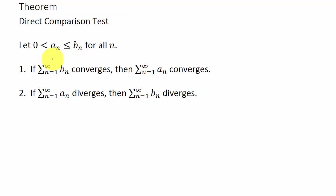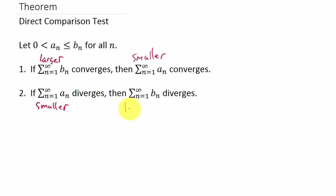What this is saying is: if the larger series converges, then the smaller series converges. And if the smaller series diverges, then the larger series also diverges. That's an easy way to look at it — you compare the two series, see which one's larger and which one's smaller, and then apply the direct comparison test.